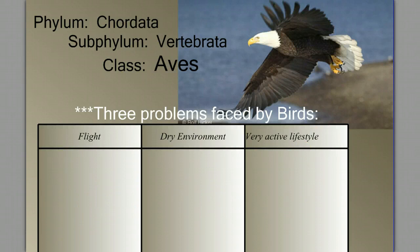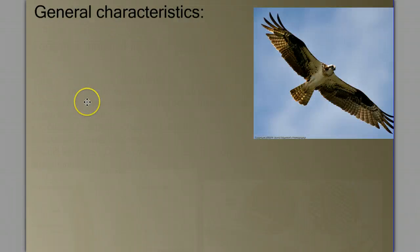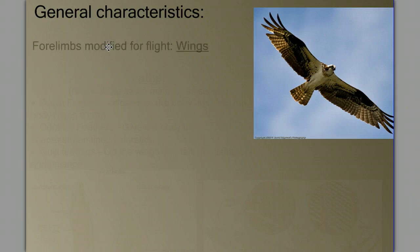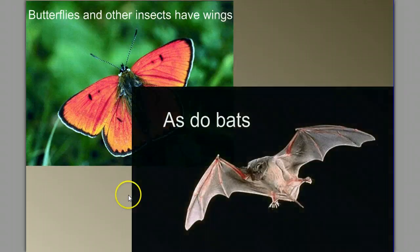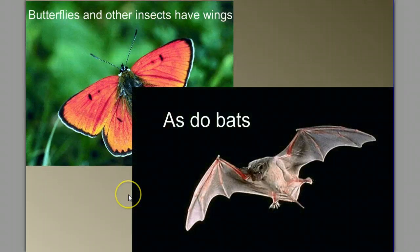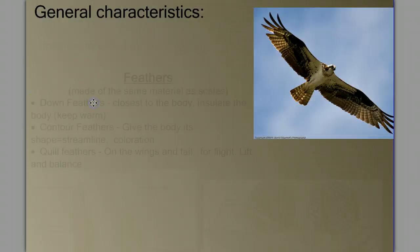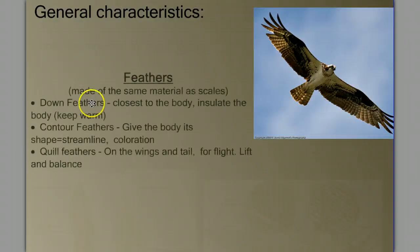Now let's take a look at the characteristics of birds. What would you say is the defining feature of birds? What makes a bird a bird? Well, it's tempting to say that they have wings, but we have to be careful. Butterflies and other insects have wings, as do bats, which are mammals. The defining feature of birds is not the presence of wings, but really the presence of feathers.